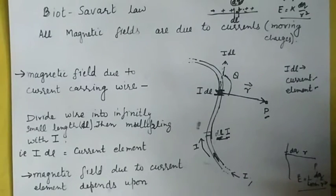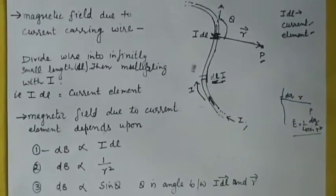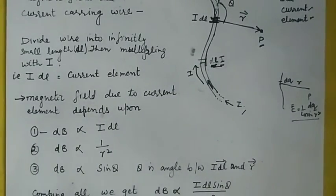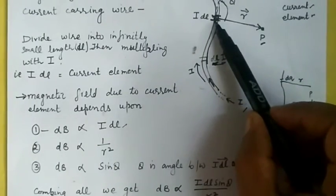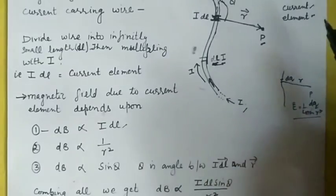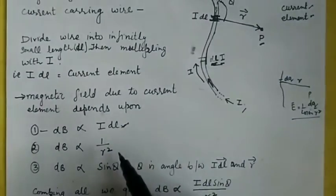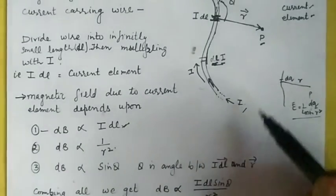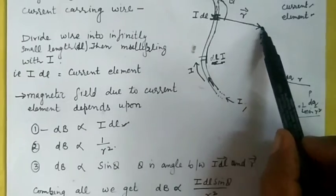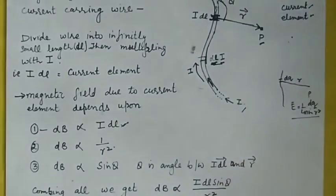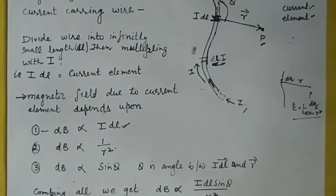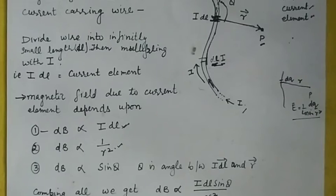It is observed that the magnetic field due to this current element depends upon, first, the current element itself. Naturally, if the magnitude of the current element is more, it will produce more magnetic field. Second, it is inversely proportional to the square of the distance. If the distance is very large, the magnetic field due to this current element will be small, as we discussed for the case of electric field. So it is inversely proportional to the square of the distance of P from the current element.